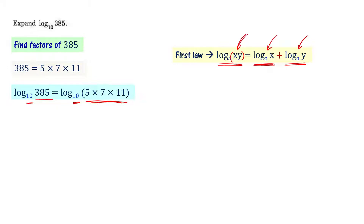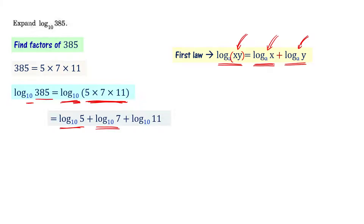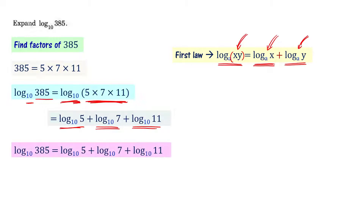The multiplication problem becomes an addition problem. So log of 5 into 7 into 11 to the base 10 can be written as log of 5 to the base 10 plus log of 7 to the base 10 plus log of 11 to the base 10. Therefore, log of 385 to the base 10 equals log 5 plus log 7 plus log 11. We have expanded a single logarithm into the sum of three logarithms.